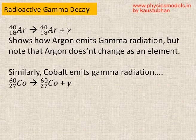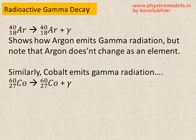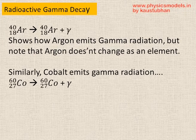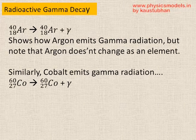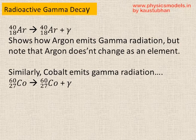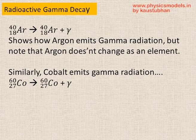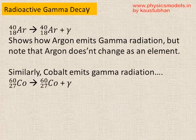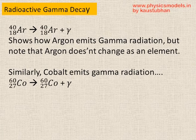Let's take an example. If you take argon-40 (atomic number 18) as the daughter nucleus, which came out of another parent nucleus, the daughter nucleus argon-40 remains argon-40 when it releases the gamma radiation. That's how you write the equation. Similarly, cobalt-60 (atomic number 27) becomes cobalt-60 plus gamma radiation emitted.